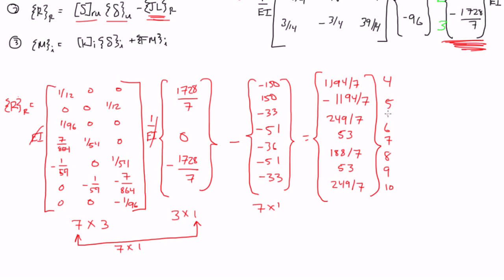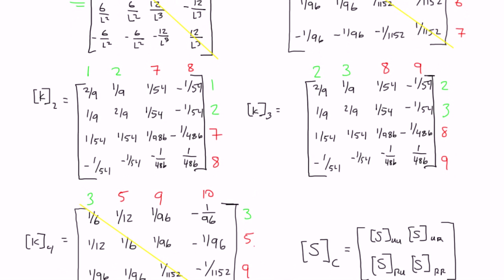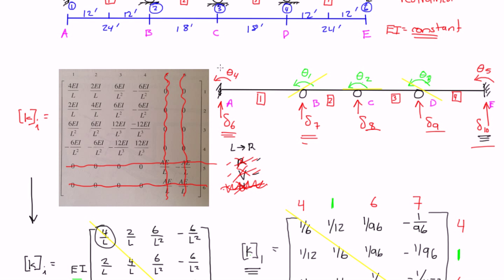And these are the reactions happening at these restrained degrees of freedom. And if there's a negative sign, that just means when we drew the degree of freedom diagram, we assumed positive, it just means it's going in the opposite direction. So we start here at 4. 4 was 1194 over 7, kip foot, and that means it's going to go in the direction we assumed it to be.